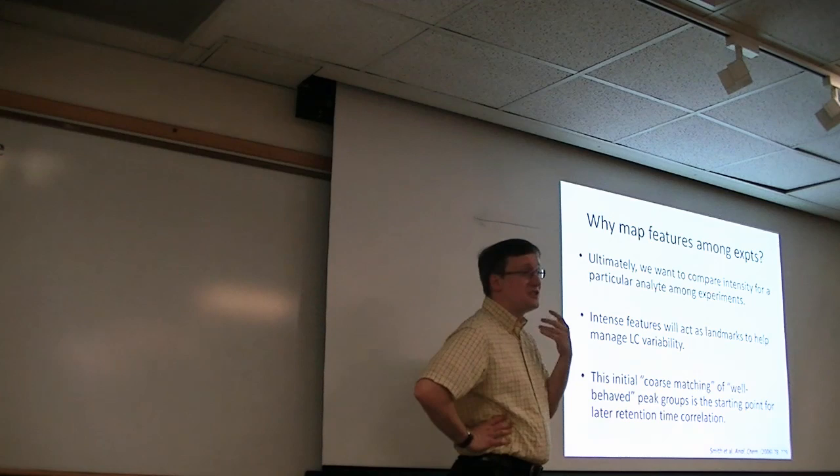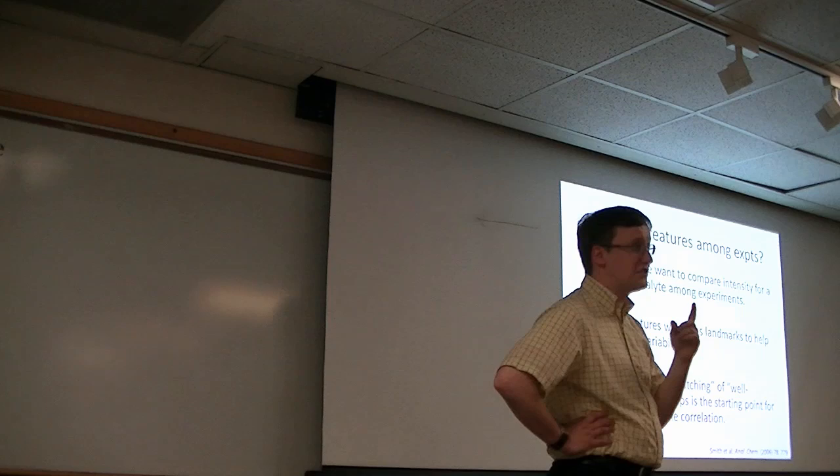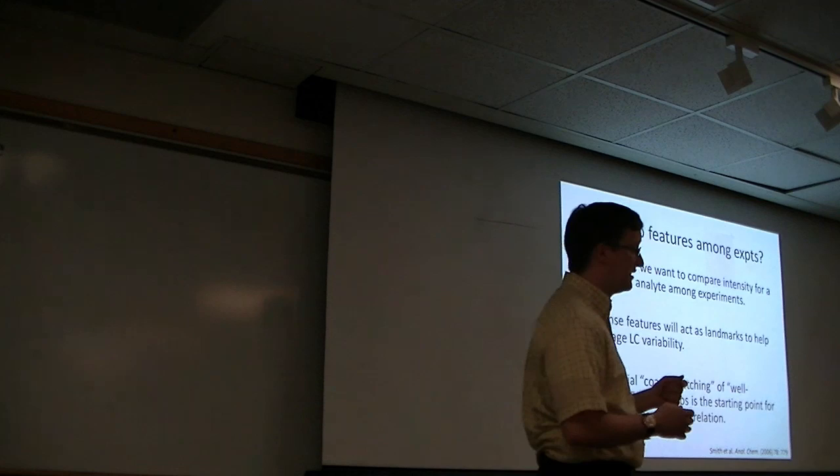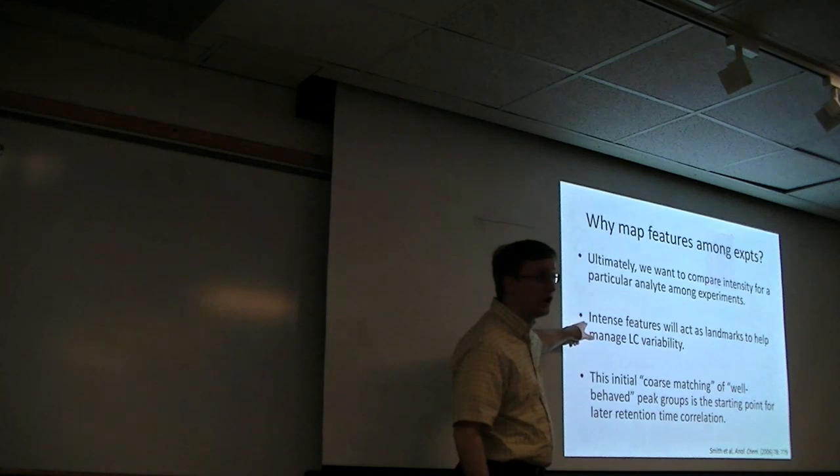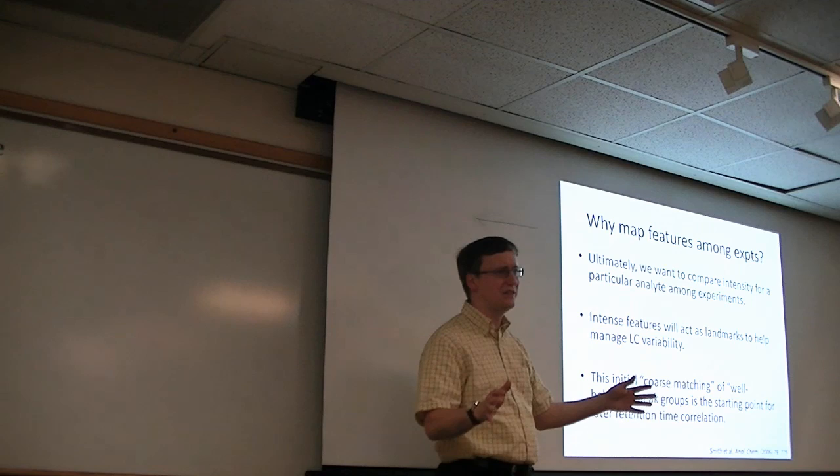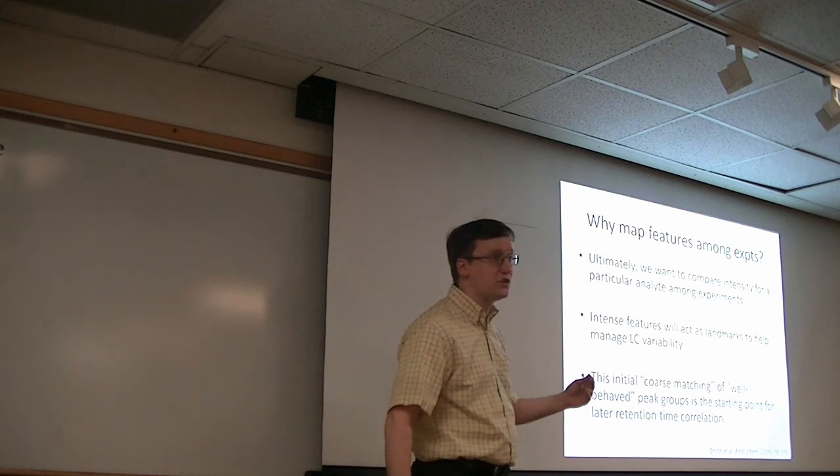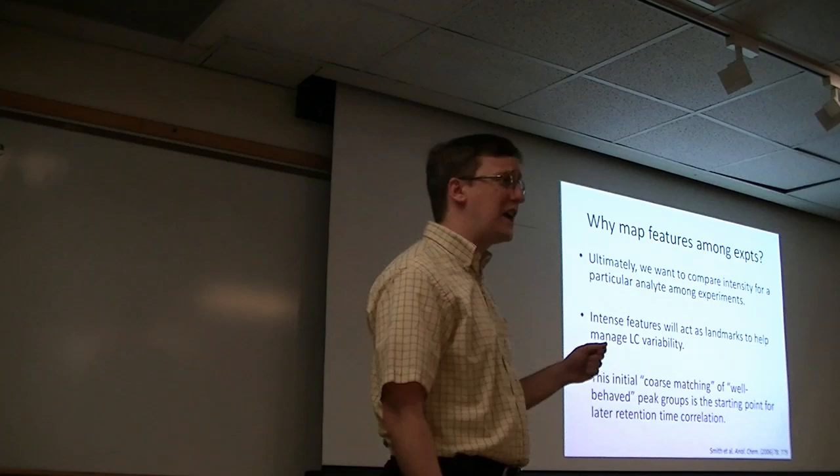Why do we do this? What's the value here for doing this mapping? We want to say, how much intensity do we have for this particular analyte across all of these experiments? Now, we haven't done retention time correction yet. As a result, small variations that occur in confined regions of retention time are not being accounted for. But our hope is that even though we haven't done that, we're going to have a few intense features that are going to line up reasonably well as we look across multiple files.